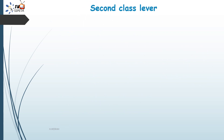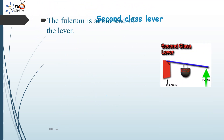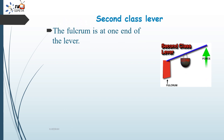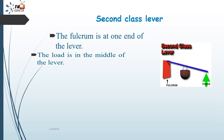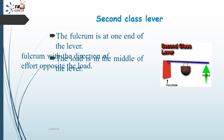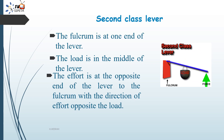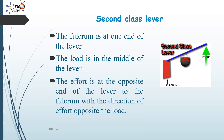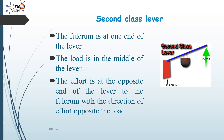In a second class lever, the fulcrum is at one end of the lever, the load is in the middle, and the effort is at the opposite end from the fulcrum, with the direction of effort opposite to the load.